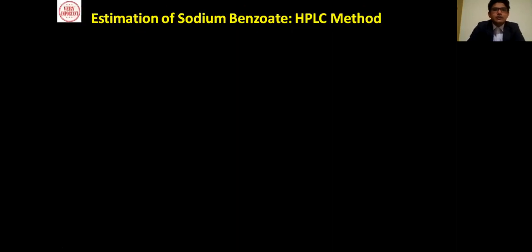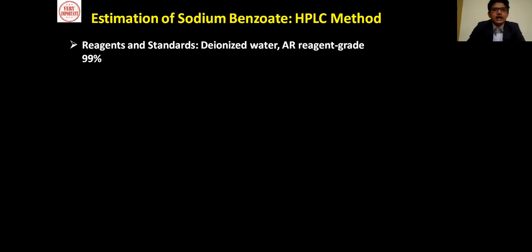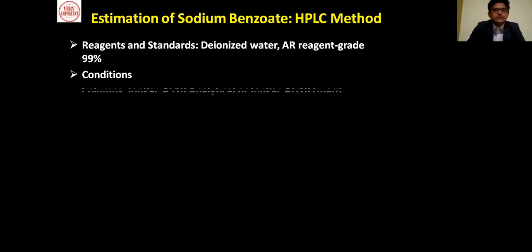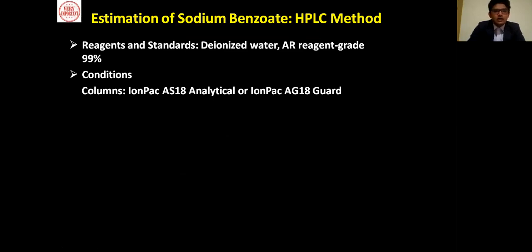Next is the estimation of sodium benzoate by HPLC method. The reagents and standards used are deionized water and air reagent grades of 99% purity. The column conditions used are an IonPac AS18 analytical column or an IonPac AS18 guard column.